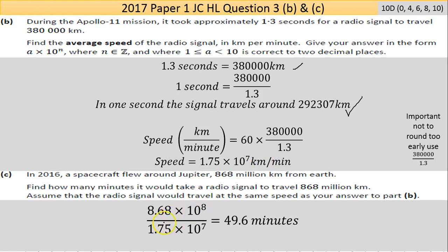So the working: I've used the answer in part (a) divided by the answer in part (b). So this is how many 1.75 times 10 to the 7 are there in 8.68 times 10 to the 8. Now this looks scary, but I'll work it out for you. Once I put it through the calculator, I end up with 49.6 minutes.